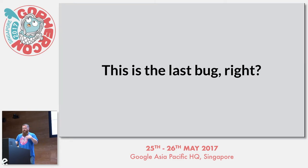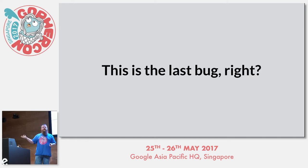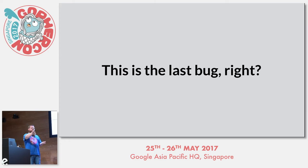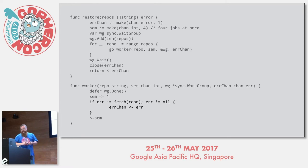After this review, we've refactored the code to make a clean separation between the function that's producing the work — our restore function — and the function that's actually processing that work, now called worker. Let's have a look at the core of the worker function that's calling fetch and handling the error. Can anyone see a problem with this?